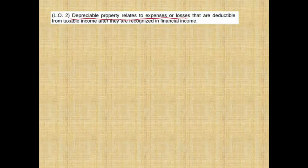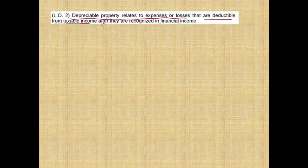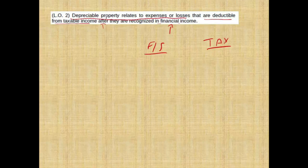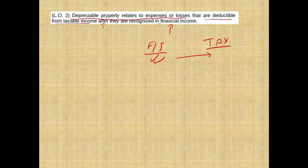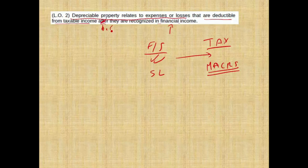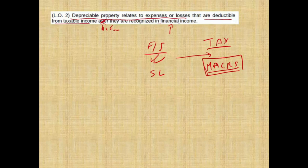Depreciable property relates to expenses and losses that are deductible from taxable income after they are recognized in financial income. This statement says when we are dealing with depreciable property, they are first deducted on the financial statement, then deducted on tax. Generally speaking, that's not true. When it comes to taxes, we use MACRS. MACRS takes more deduction than the financial statement, which uses straight-line. Therefore, the answer is they are deductible before they are recognized in the financial statement — generally speaking, assuming we are using MACRS for taxes and straight-line for financial reporting purposes.